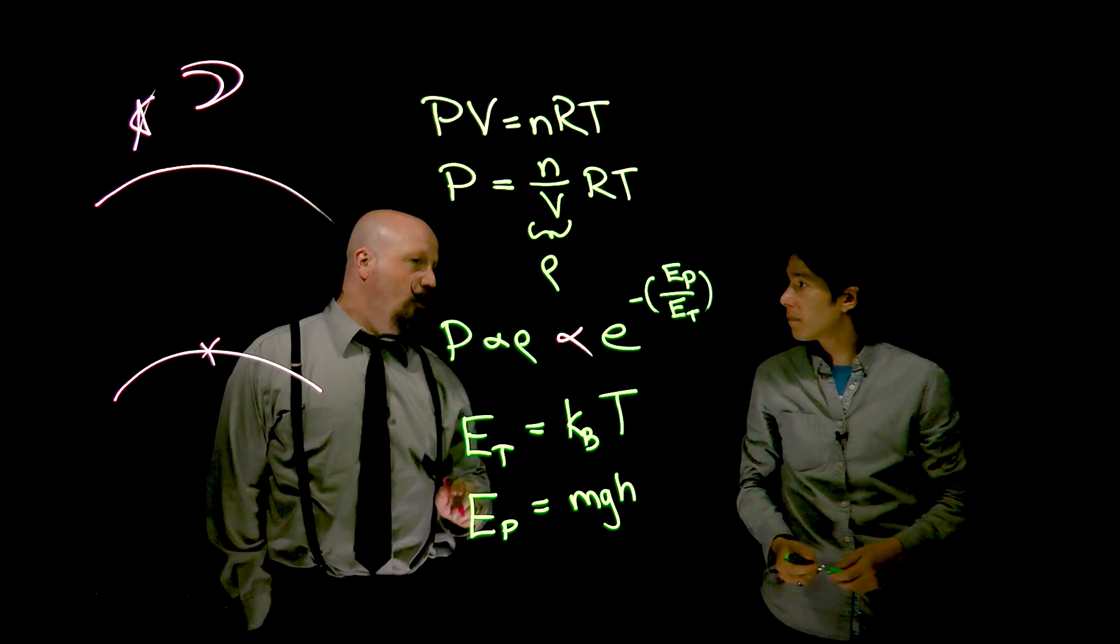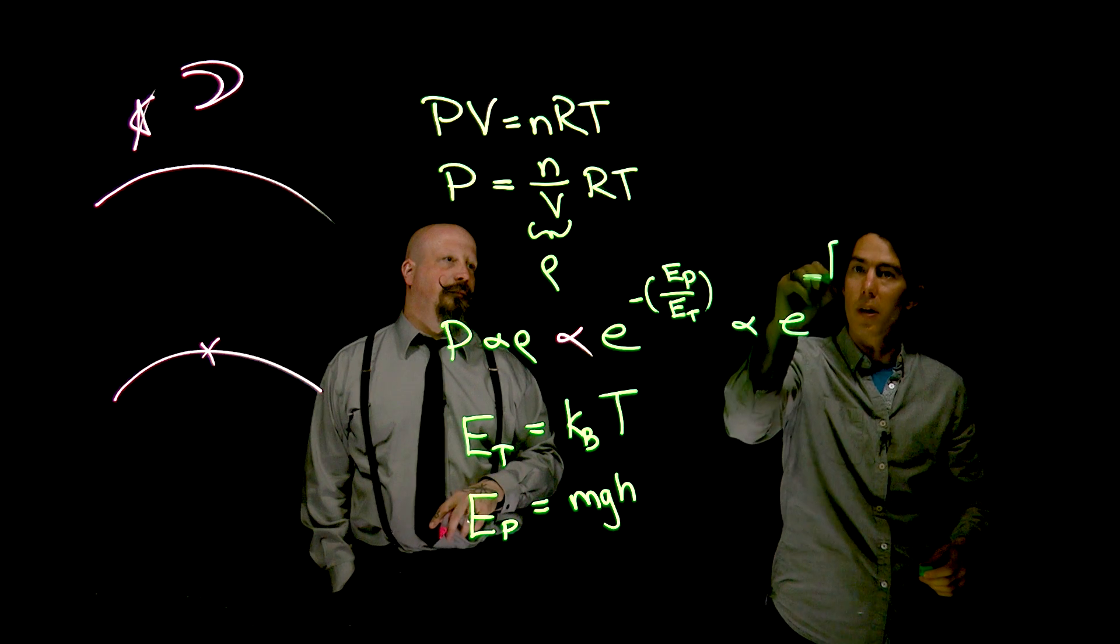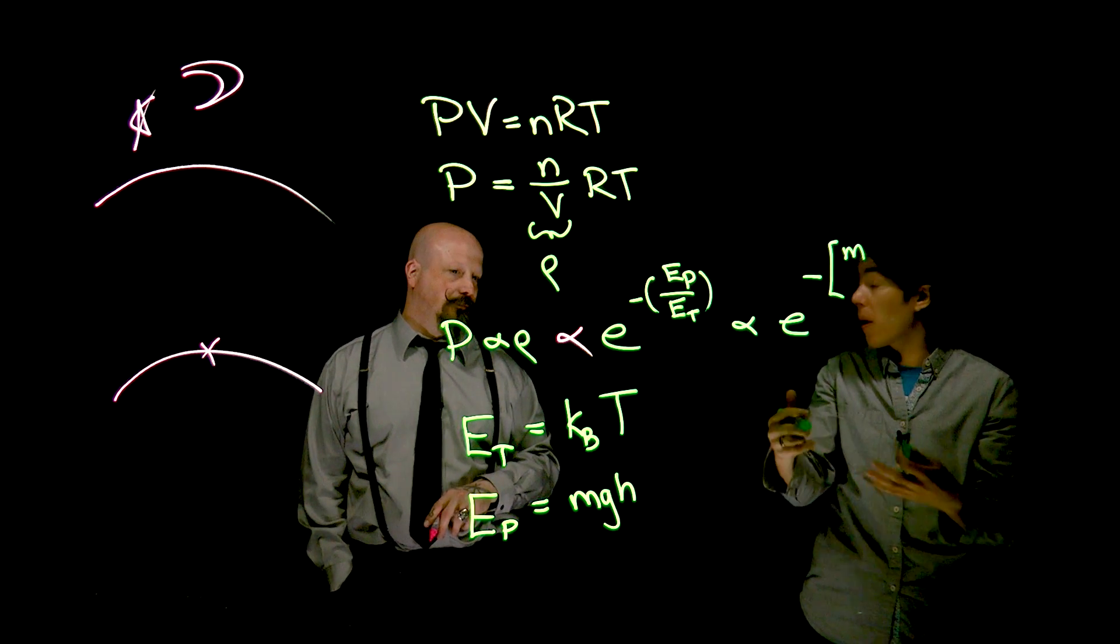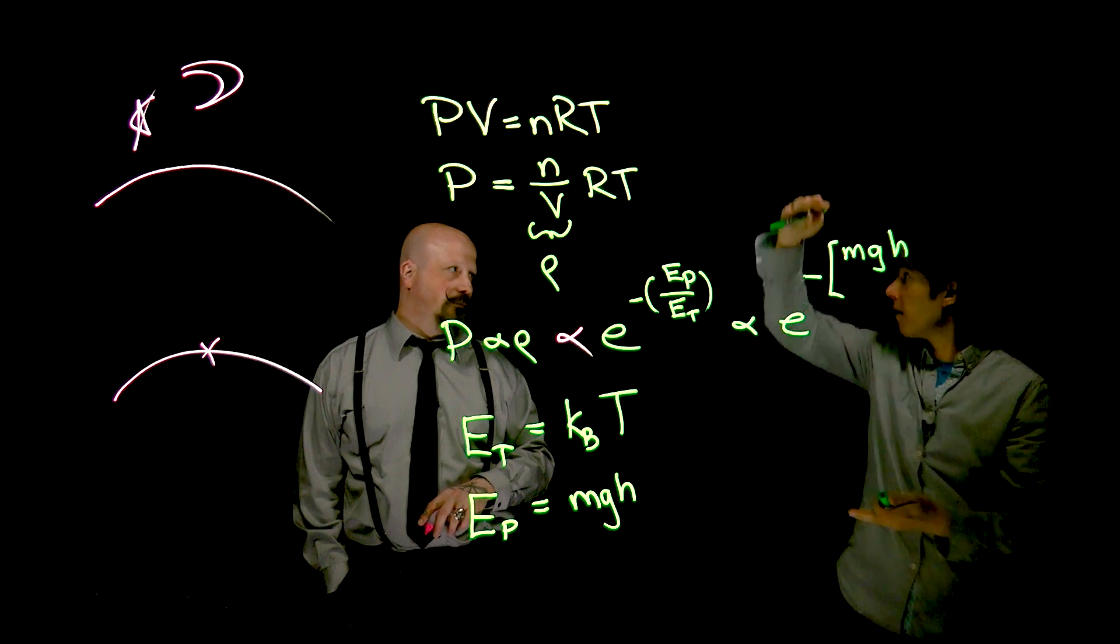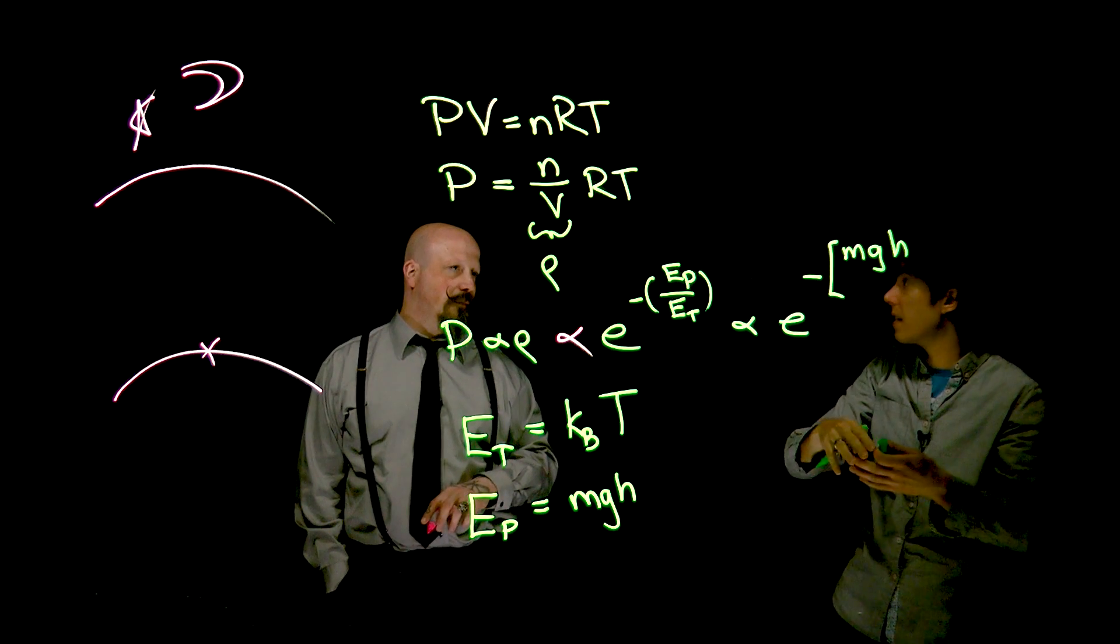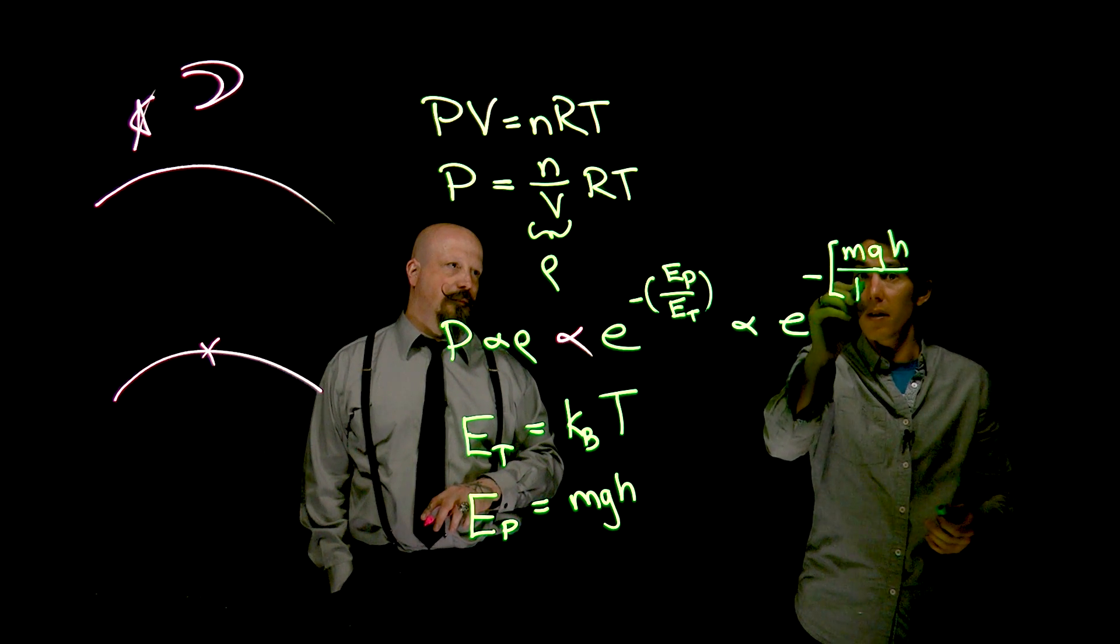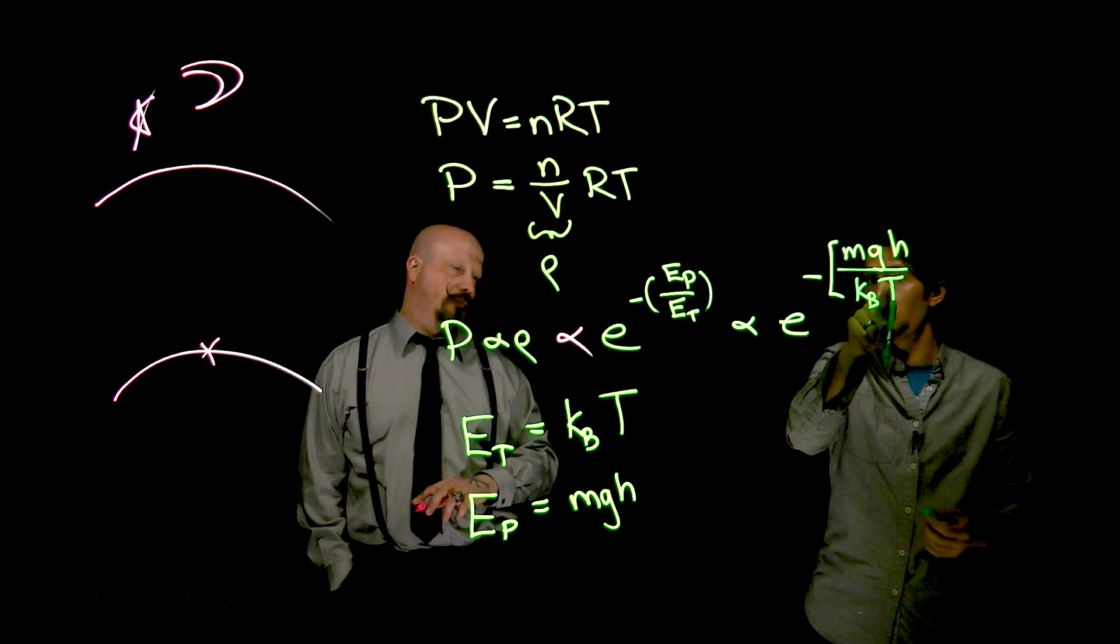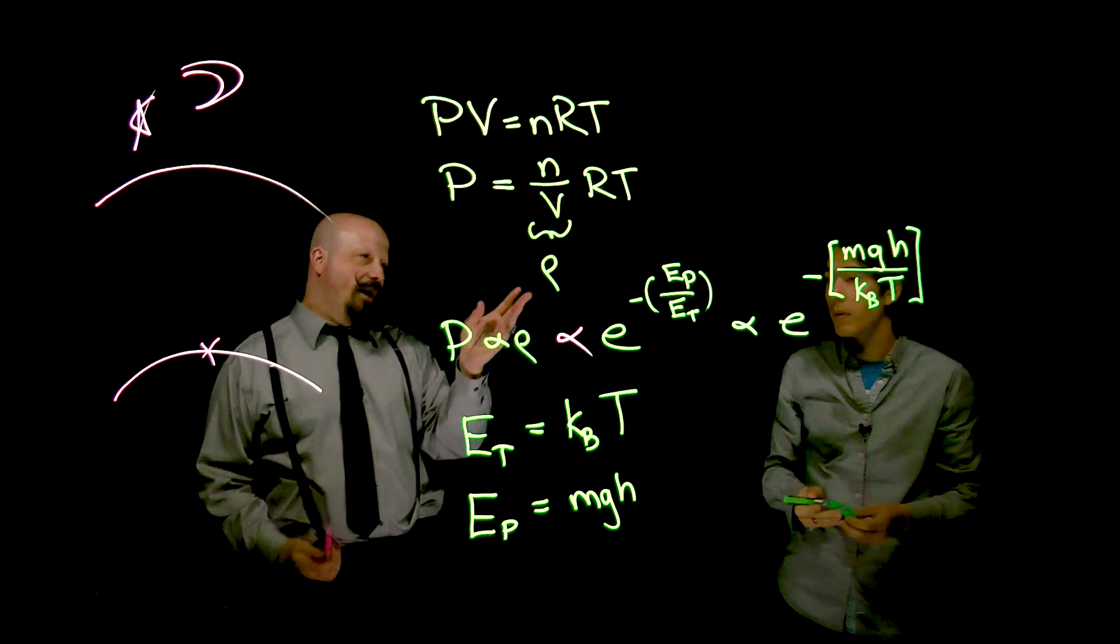Yep. And in reality, if you were to write that out in full. So let's write that out as e to the minus. Now we're going to have a bunch of terms in here. Here would be the mass of a gas molecule. G is our constant and h would be the height above some reference point, maybe at sea level height in meters. And then we're going to have the thermal energy. This again is a constant Boltzmann's constant and the temperature, which we're going to keep in Kelvin, not Celsius.